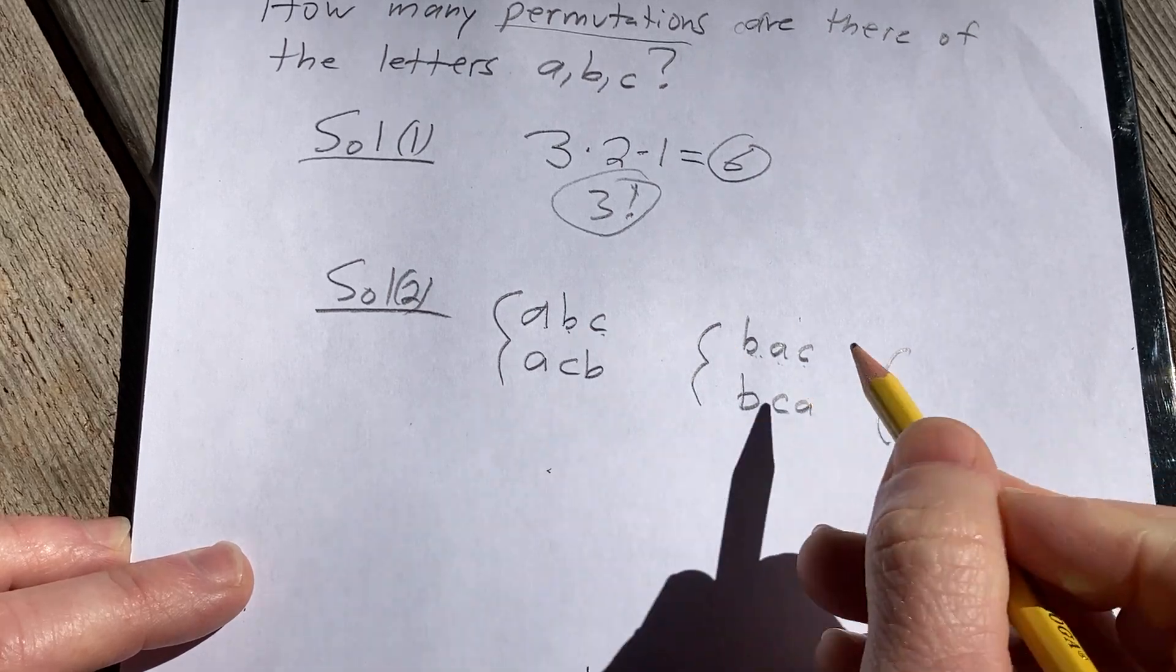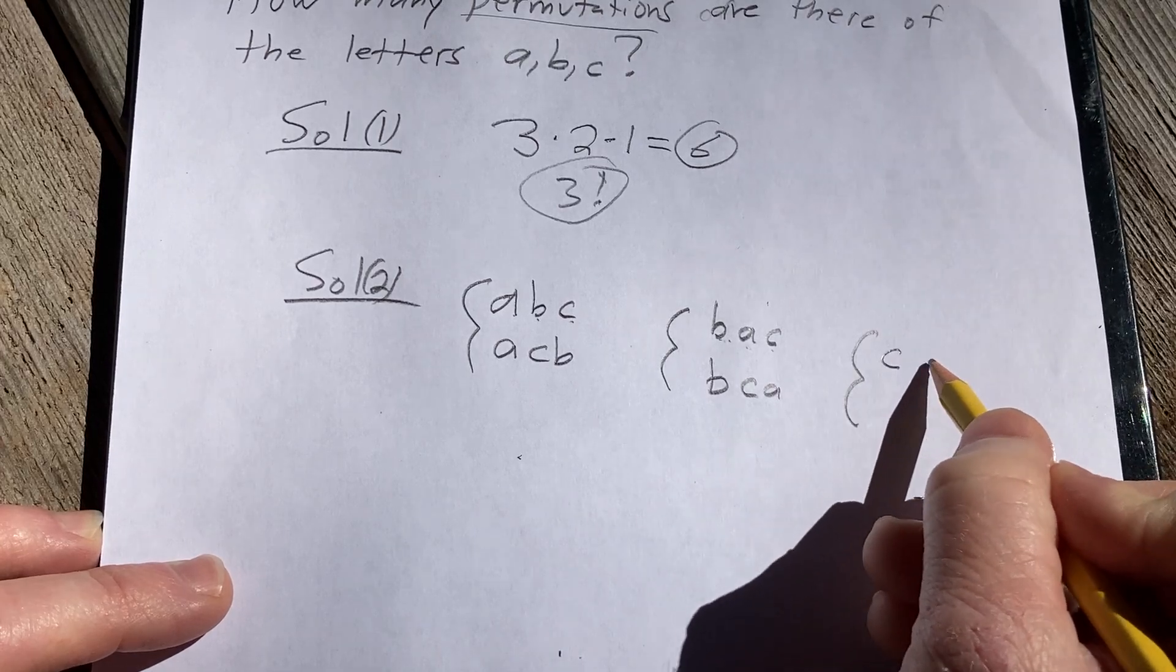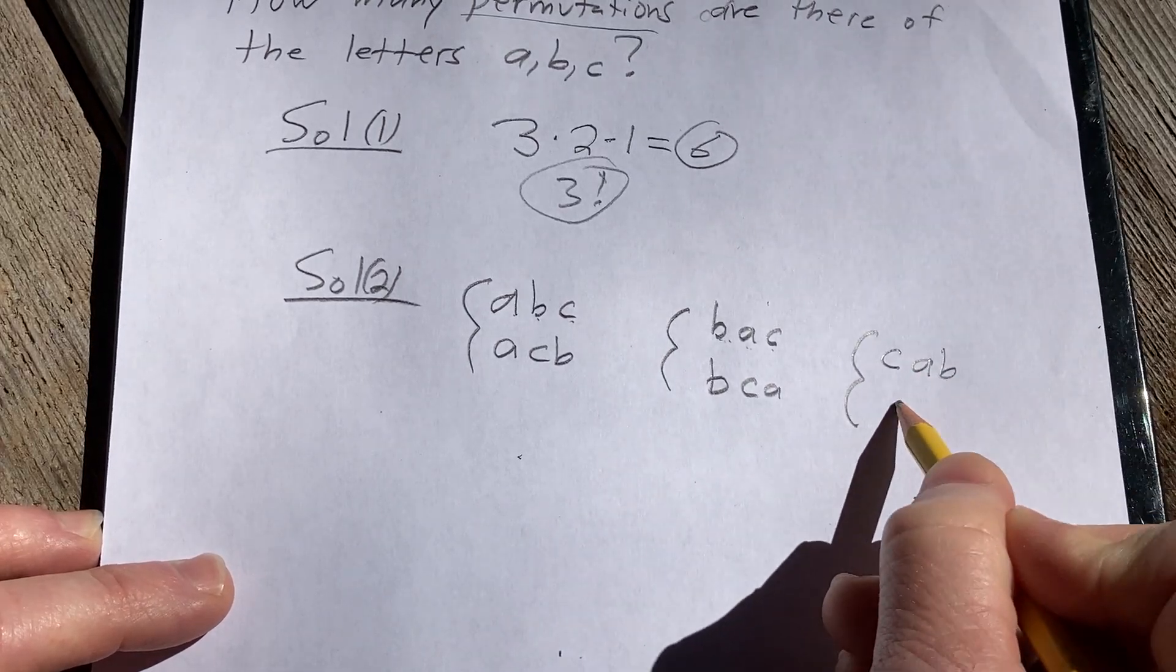And lastly, continuing in a similar fashion, we look at all the permutations that start with the letter C. So, that would be C, A, B, and then the other one would be C, B, A.